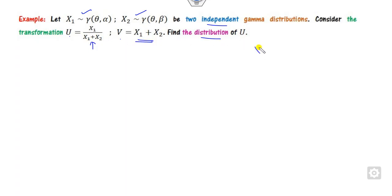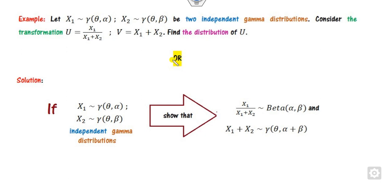Can we say that if x1 and x2 follow the gamma distribution, then their sum is also a gamma distribution? That is the purpose of this task. In other words, if x1 and x2 are gamma distributed, show that their sum is again a gamma distribution, while their ratio will follow the beta distribution.